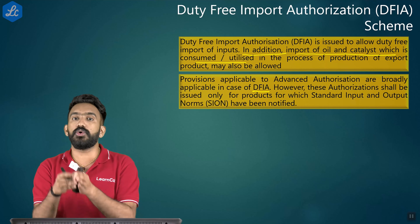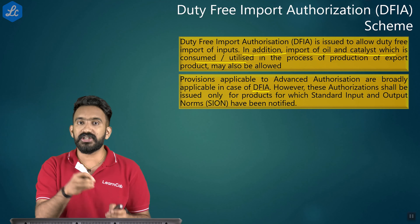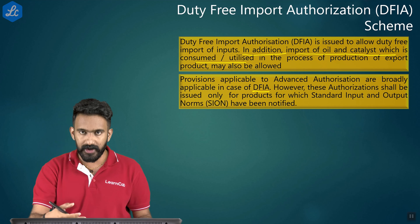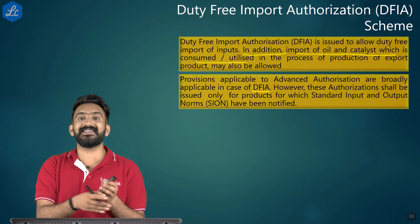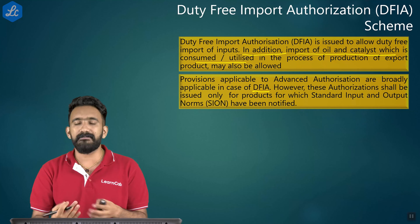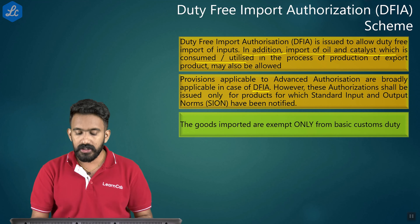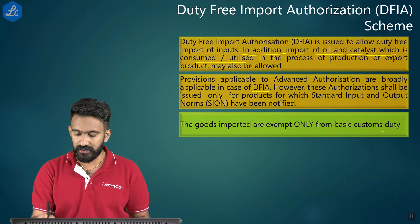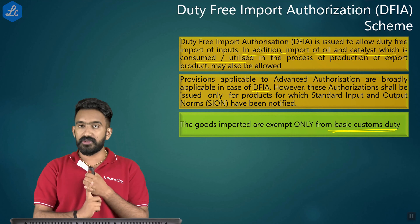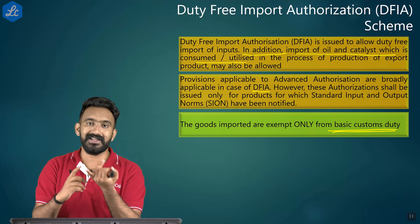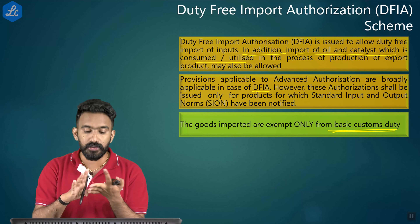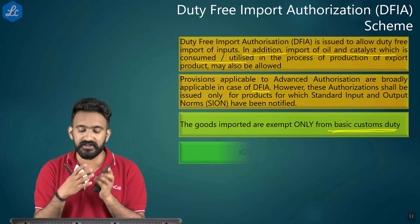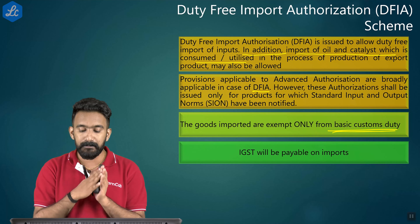This is one of the main differences between Advanced Authorization and DFIA. DFIA is purely for those products mentioned in SION — Standard Input Output Norms. Only notified products can go for DFIA. Goods imported under DFIA are exempt only from Basic Customs Duty (BCD), whereas under Advanced Authorization, duties like safeguard duty, anti-dumping duties, additional duties, GST, and CESS are also exempted.